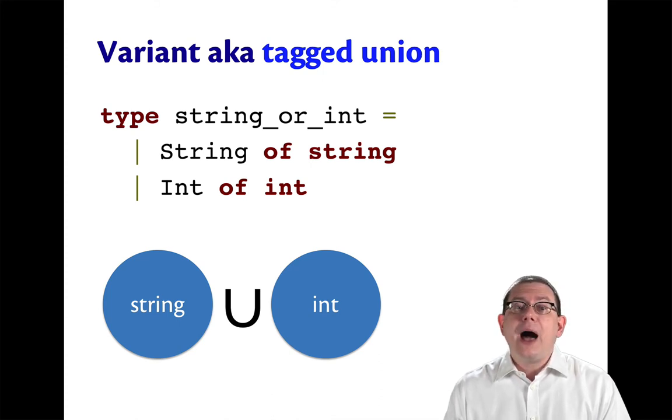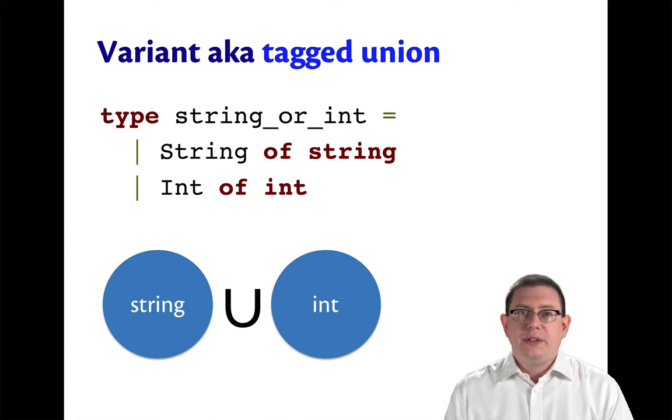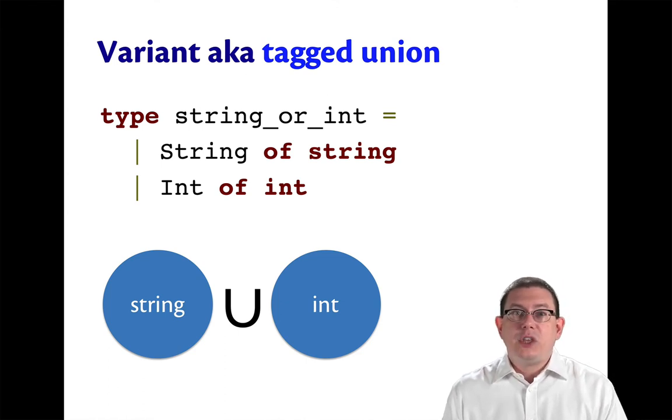And now any value of type string underscore or underscore int is going to be exactly one of either a string or an int. So in a sense, we've taken the union of those two sets, those two types.